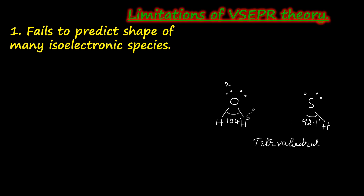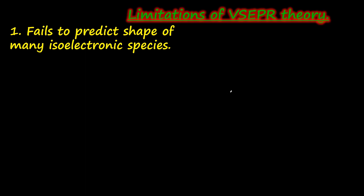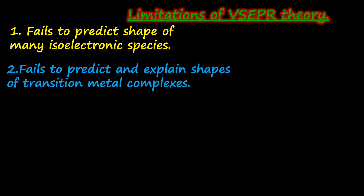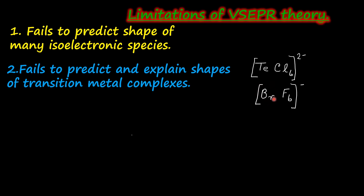Now we will move on to the second limitation of VSEPR theory: it fails to predict and explain the shapes of transition metal complexes. Consider two examples — hexachlorotellurate 2⁻ and bromine hexafluoride anion. In the first case, tellurium is the central atom and in the second case, bromine is the central atom. Both these have the same number of bonds around the central atom. As per VSEPR theory, the shape is pentagonal bipyramidal. But in reality, it has been found that these two have different shapes.